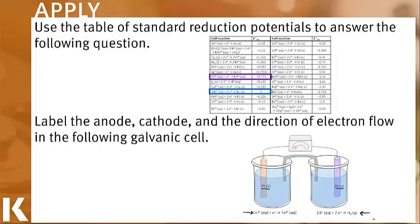The more positive reduction potential is more likely to be reduced, which means that it will be the cathode. So iron has the higher reduction potential, and therefore the left side of my cell will be the cathode where reduction is occurring.